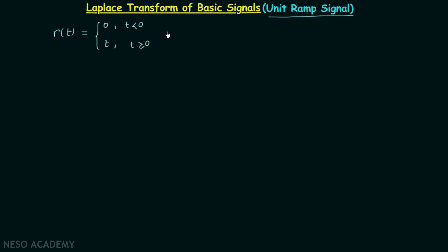There is one more way to define the unit ramp signal. When you multiply the unit step signal u(t) by t, you will have the unit ramp signal. You will also get the unit ramp signal when you integrate the unit step signal.